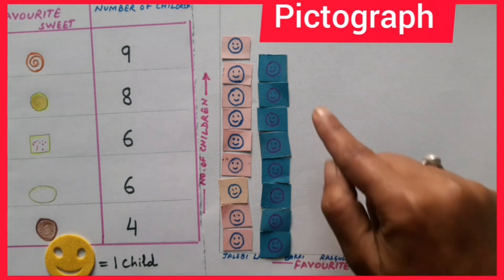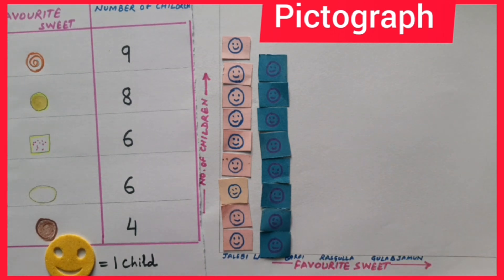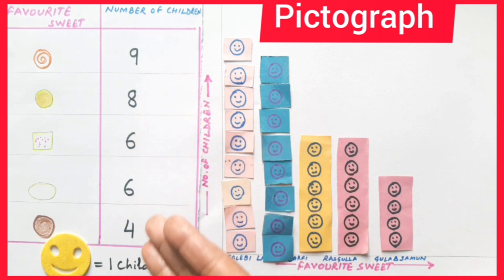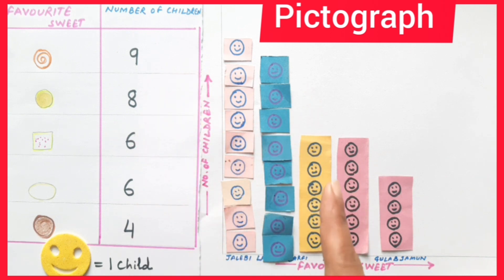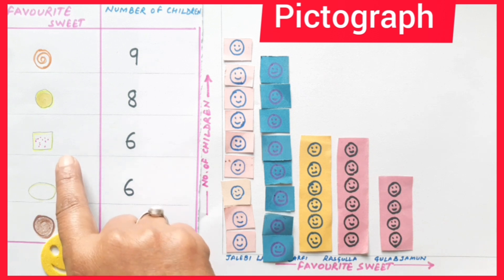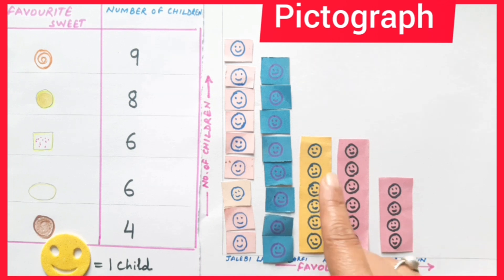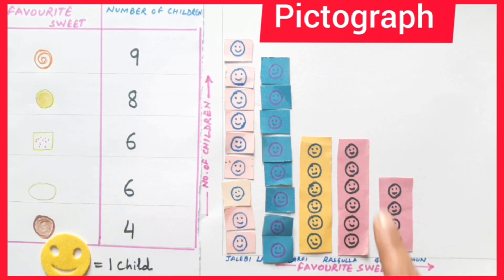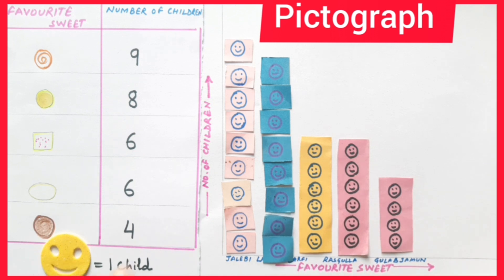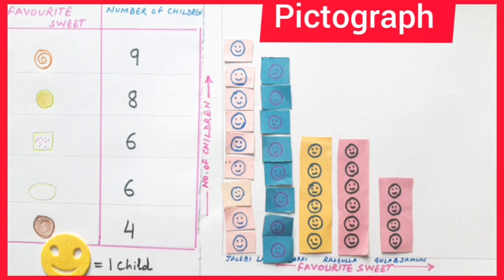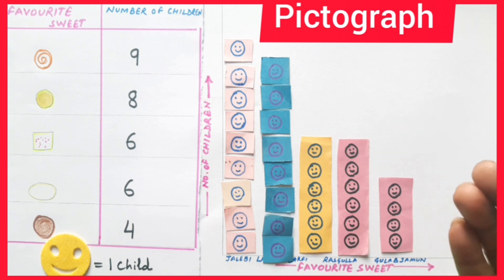Laddu is represented by eight smileys. In this way, we have represented the whole information in the form of a vertical pictograph. The number of children liking barfi are six, so it is represented by six smileys. The children liking rasgulla are again six, also represented by six smileys. And the children liking gulab jamun are four, shown by four smileys. So we have depicted the whole information in the form of a vertical pictograph.